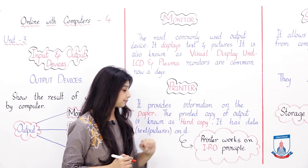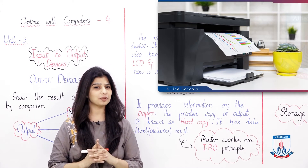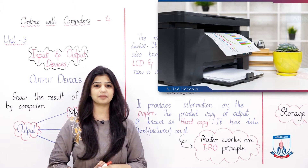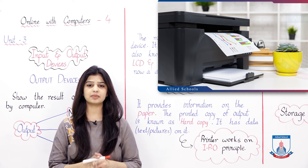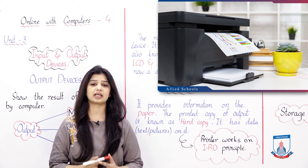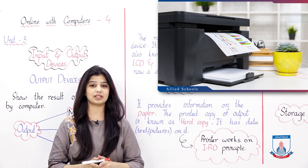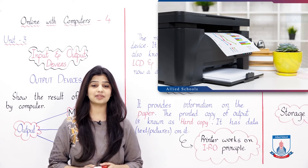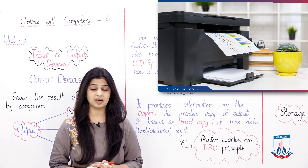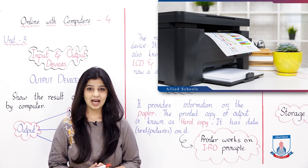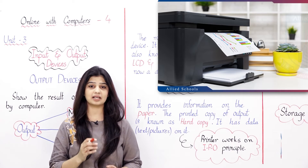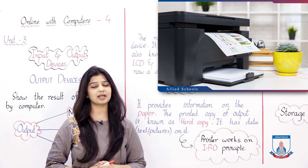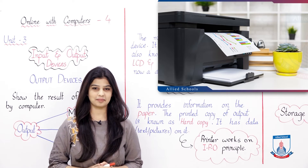Printer works on the IPO principle — Input, Processing, and Output. In 3 steps, we work our printer. When we give a command to the computer to print a document, the computer generates an input for the printer and the document is given to the printer. The printer receives the input. Then, printing on the paper is the processing. After that, the printed document on paper is the output. So the printer works on the IPO principle.